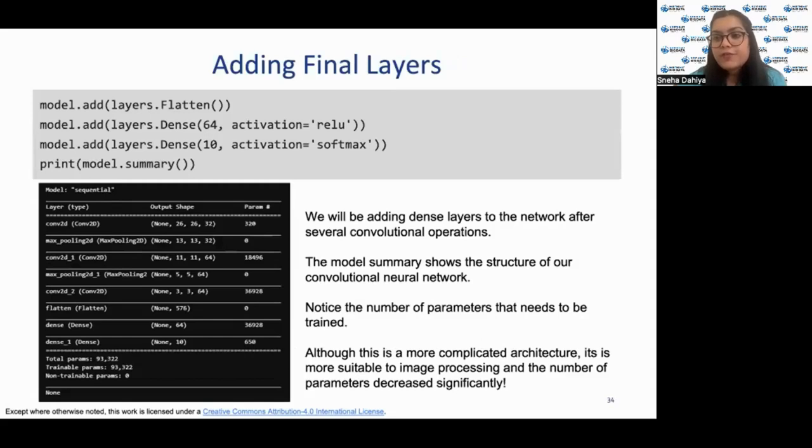Now, finally, we'll add the final layers to our convolutional neural networks. We'll be adding dense layers to the networks after several convolutional operations. The model summary shows the structure of our convolutional neural networks. Notice the number of parameters that need to be trained, that is 93,322. Although this is a more complicated architecture, it is more suitable to image processing, and the number of parameters are decreased significantly.